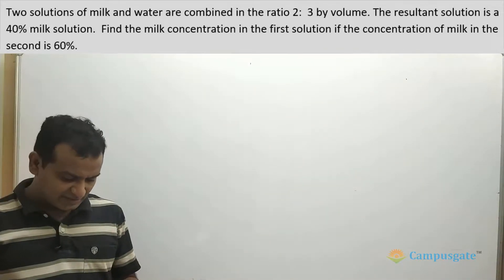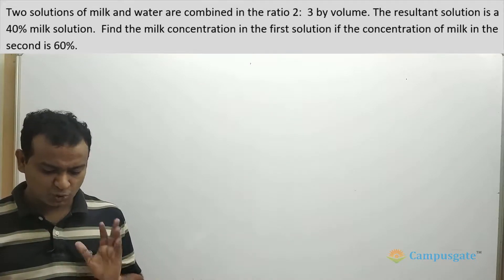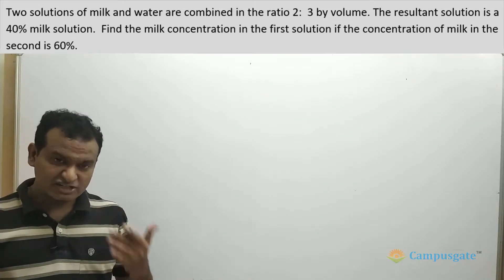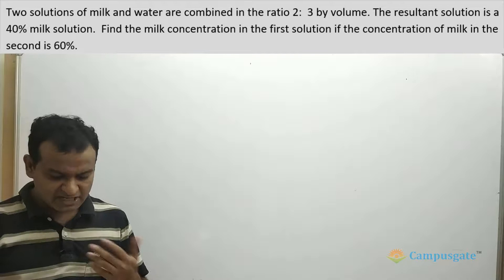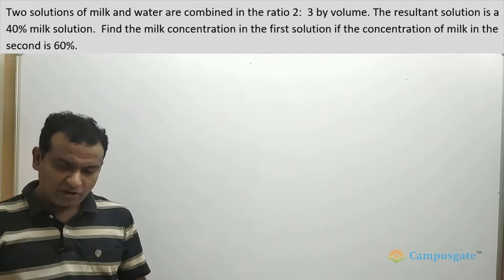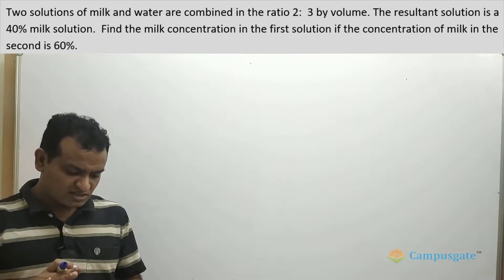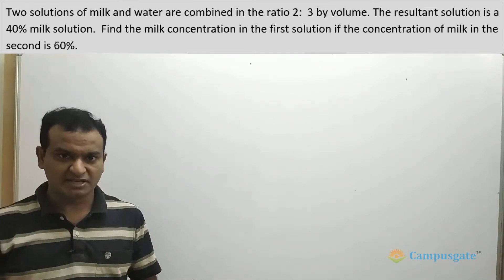In this question, two solutions of milk and water are mixed in the ratio 2 to 3, and the resultant solution, the weighted average, is 40% milk solution. We have to find the concentration of the first solution given that the concentration of the second solution is 60%.